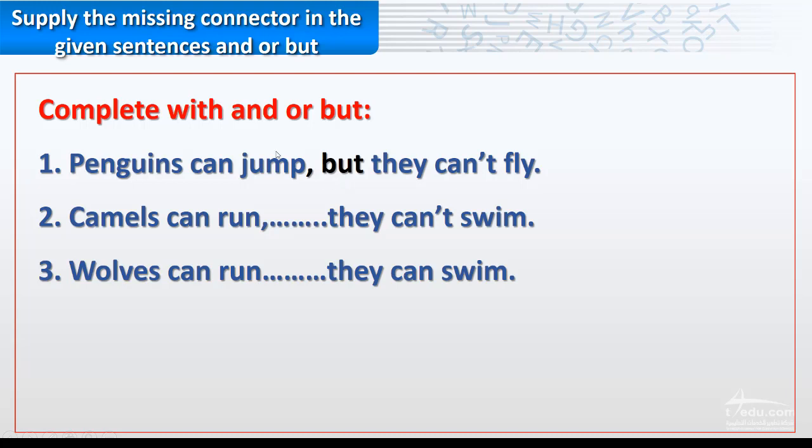Number two: Camels can run, space, they can't swim. Camels can run and they can't swim, or camels can run but they can't swim. What do you think? Do you think extra information or opposite? Opposite, yes. Camels can run but they can't swim.